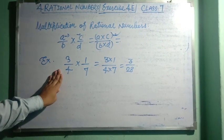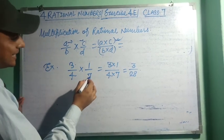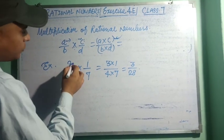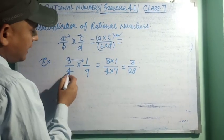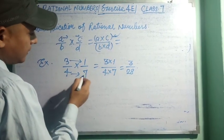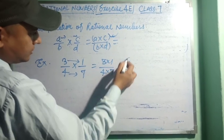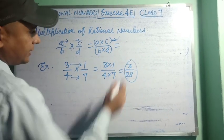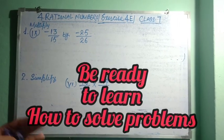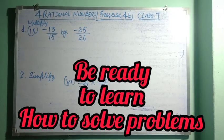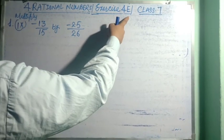Let us see with the help of an example. Here, 3/4 multiplied by 1/7. We multiply numerator by numerator and denominator by denominator: 3 × 1 = 3, and 4 × 7 = 28. So the answer is 3/28.